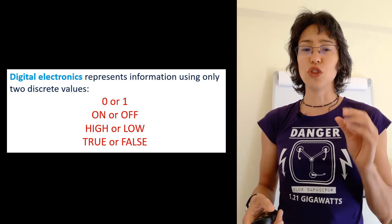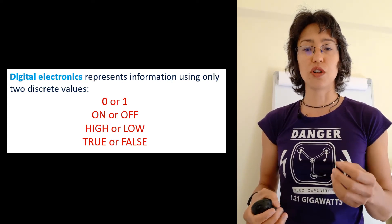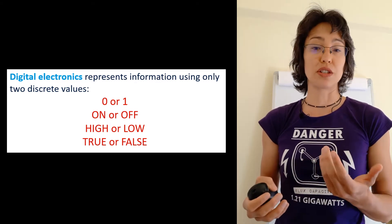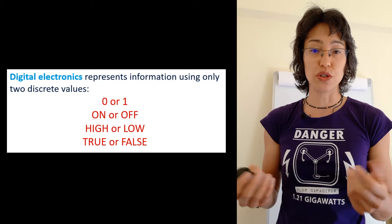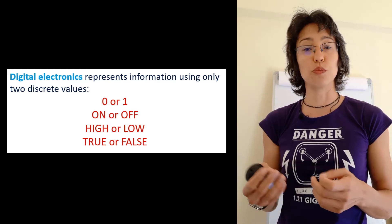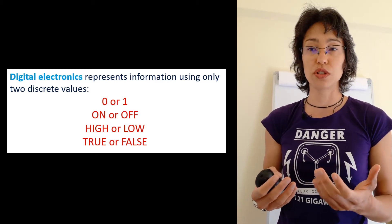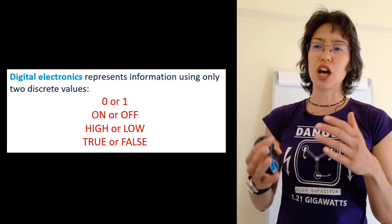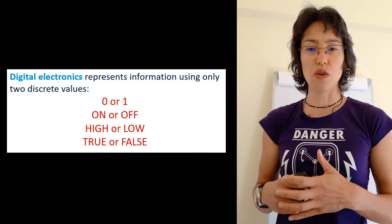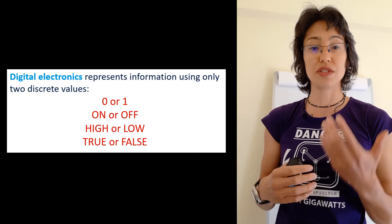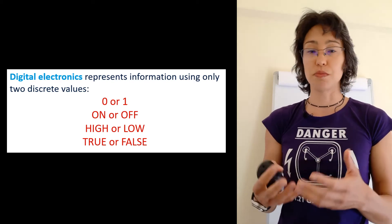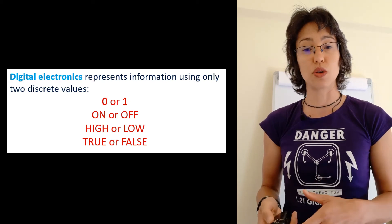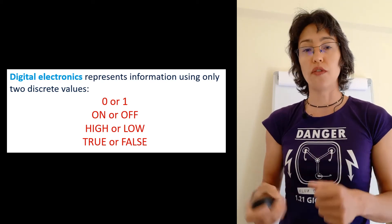Ideally, no voltage or ground—so zero volts—would represent zero, and the full source voltage would represent a one. In the case where you're using an Arduino, for instance, one would be represented by five volts. But realistically, a low voltage—something less than one volt—would give us a reading of zero, and a high voltage—something above maybe four volts—would represent a one, so on or off states.